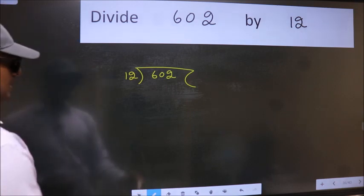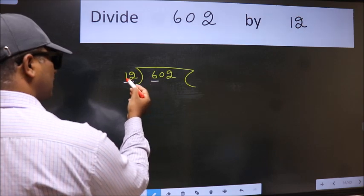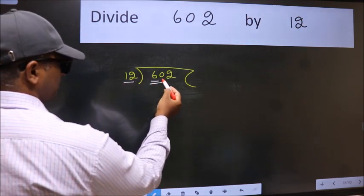Next. Here we have 6 and here 12. 6 is smaller than 12, so take 2 numbers: 60.